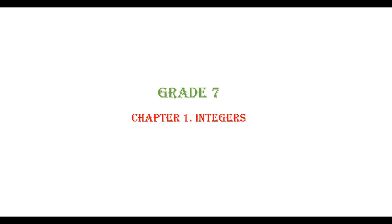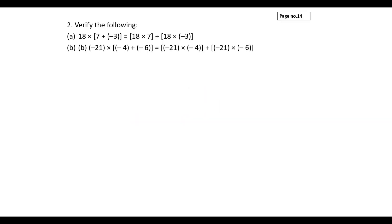Verify the following: question number (a) 18 × (7 + (-3)) = (18 × 7) + (18 × (-3)). By seeing the numbers, you can identify it is distributive property. So a is 18, b is 7, and c is -3. Now perform the operations.